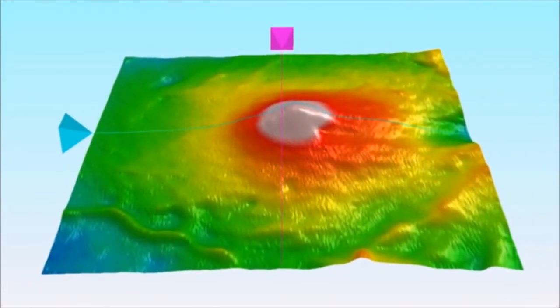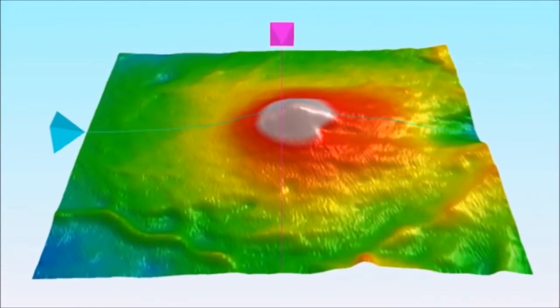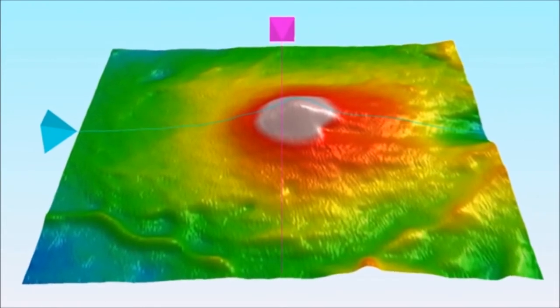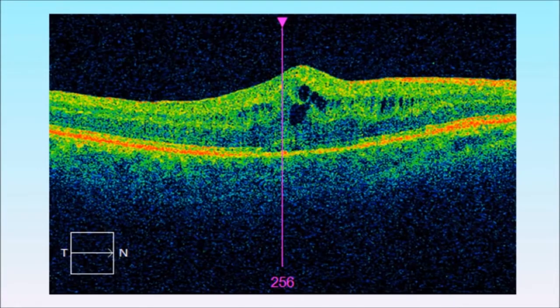This 3D scan shows a blister of interretinal fluid that has occurred following cataract surgery. The location of the fluid is shown clearly on the 2D OCT section. We treated this condition with steroid eye drops until a normal retinal profile returned.